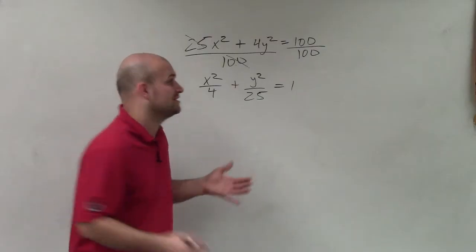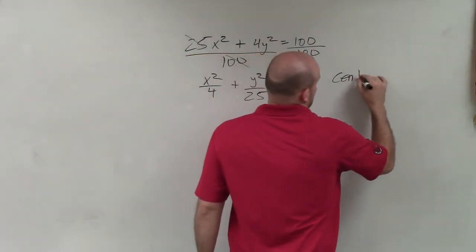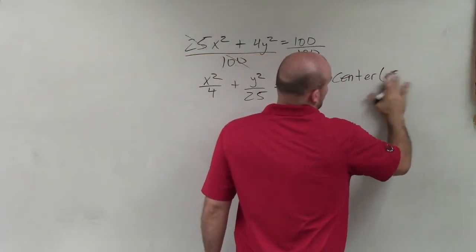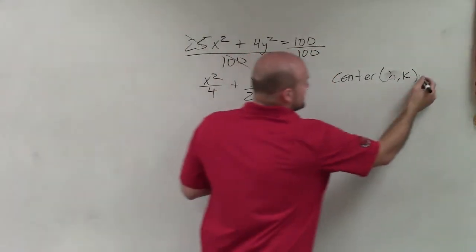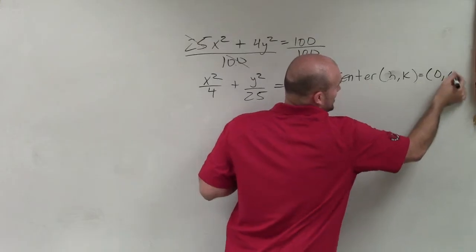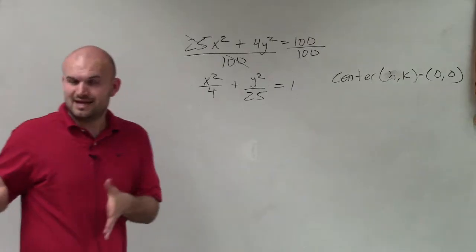So therefore, the center is always in the form of h comma k. Well, since there's no h and k's for this, my center is going to equal 0 comma 0. And that's going to be very nice and helpful.